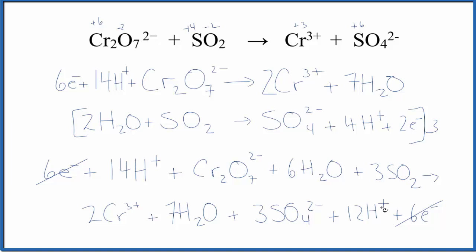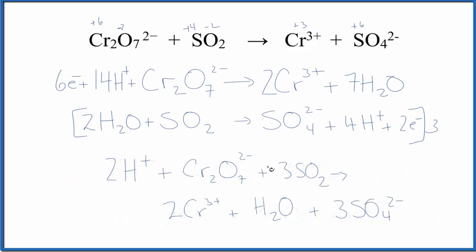I have 12 hydrogen ions here and 14 here. I'm going to cross these out and change that to two. Six water, seven water. So let's cross this out and this. Now we just have one water. Let me clean this up.